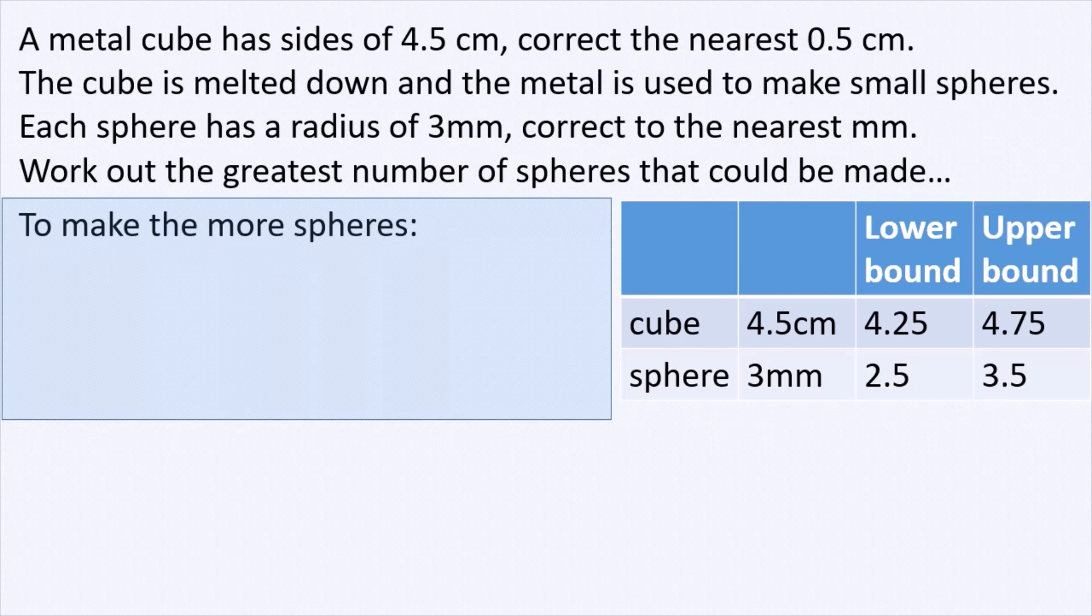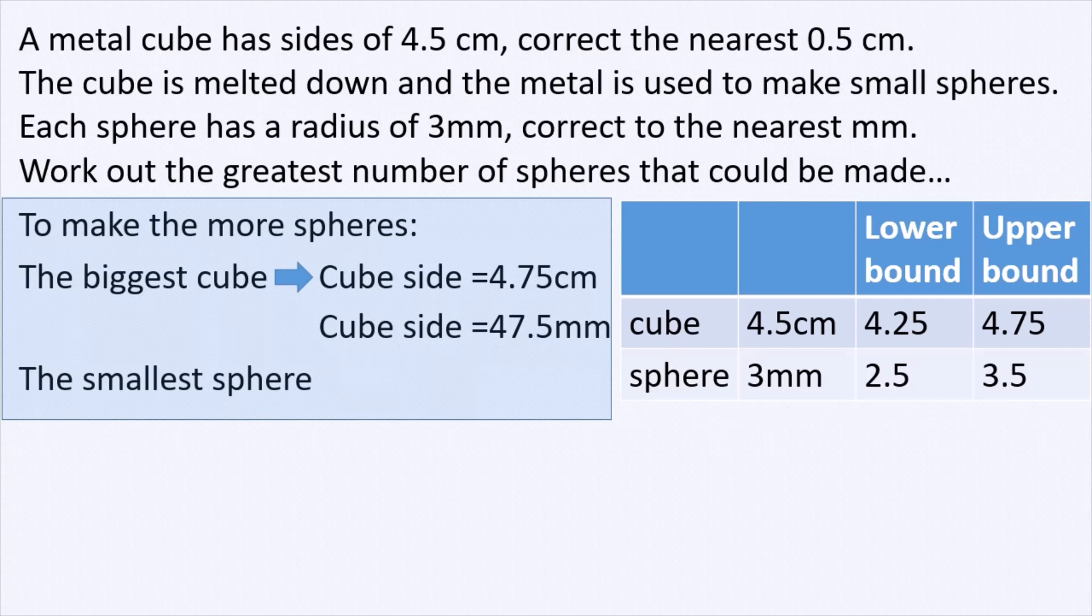To make more spheres, we need to get the biggest cube possible. Therefore, we choose the upper bound for the side of the cube, which is 4.75 centimeters. This turns out to be 47.5 millimeters. And we have to get the smallest sphere in order to make the biggest number of spheres. Therefore, we get the lower bound for the radius, which is 2.5 millimeters.